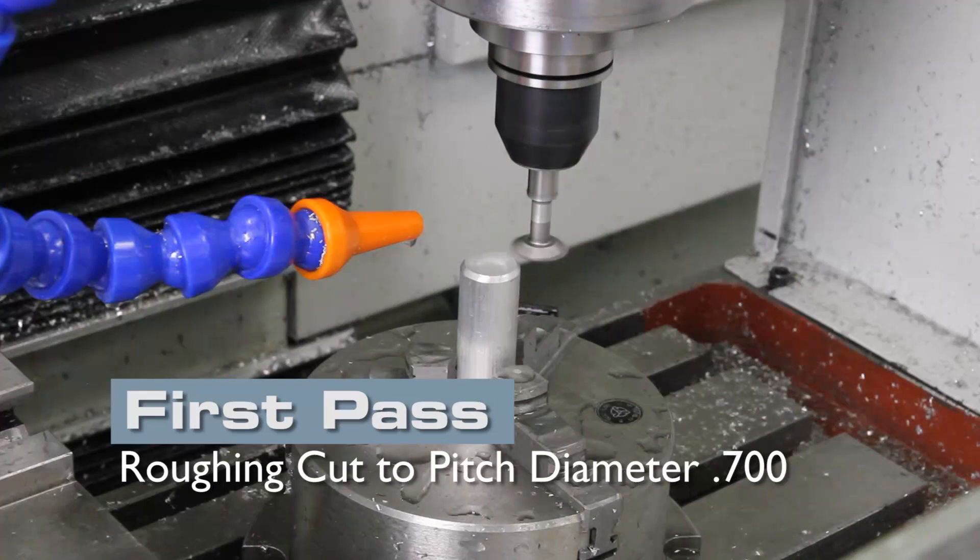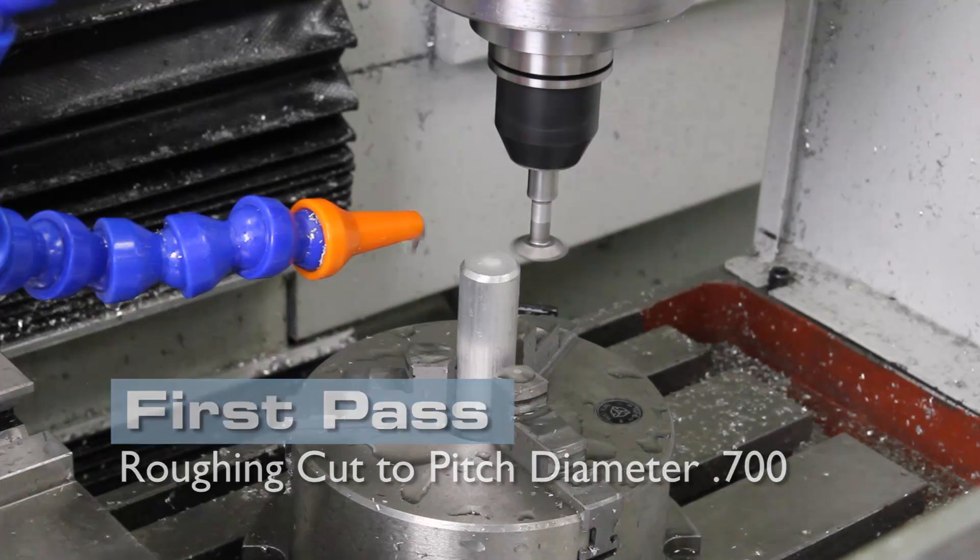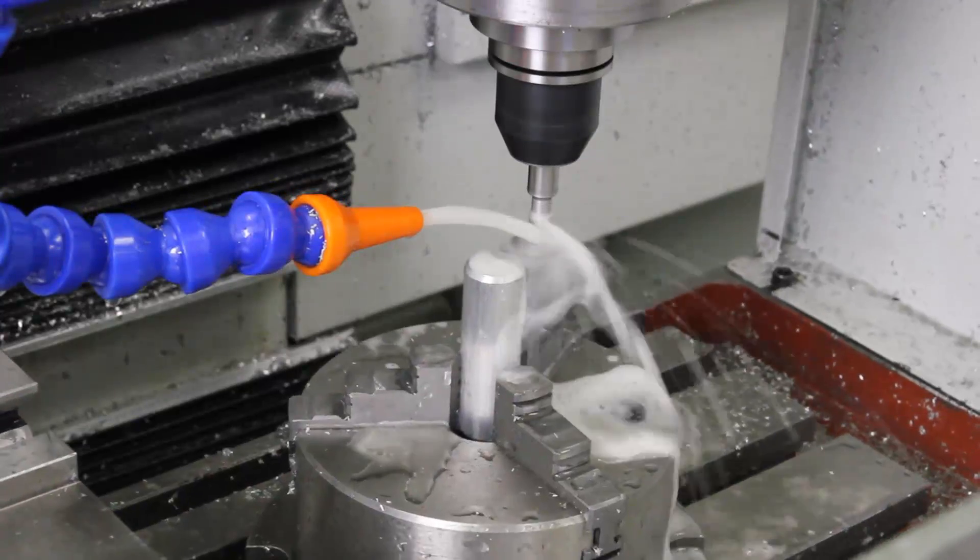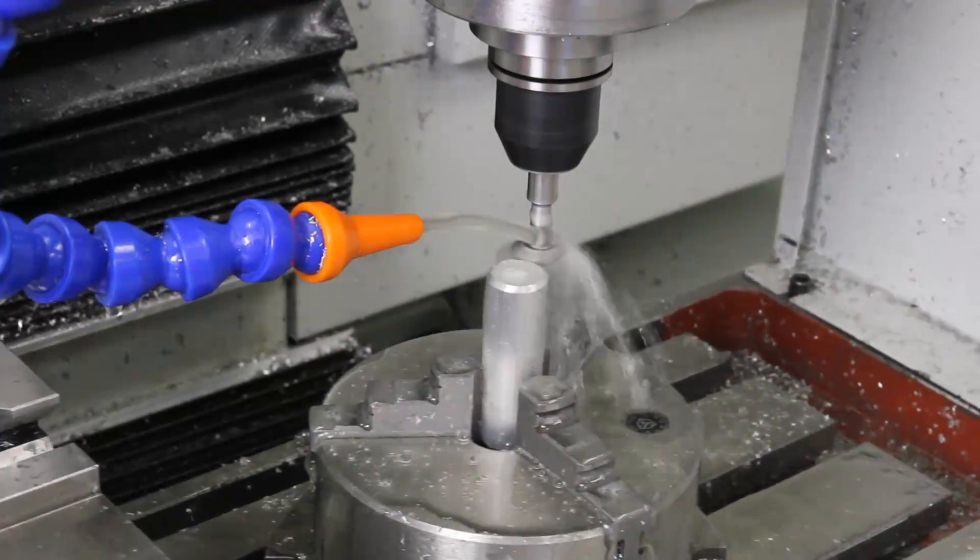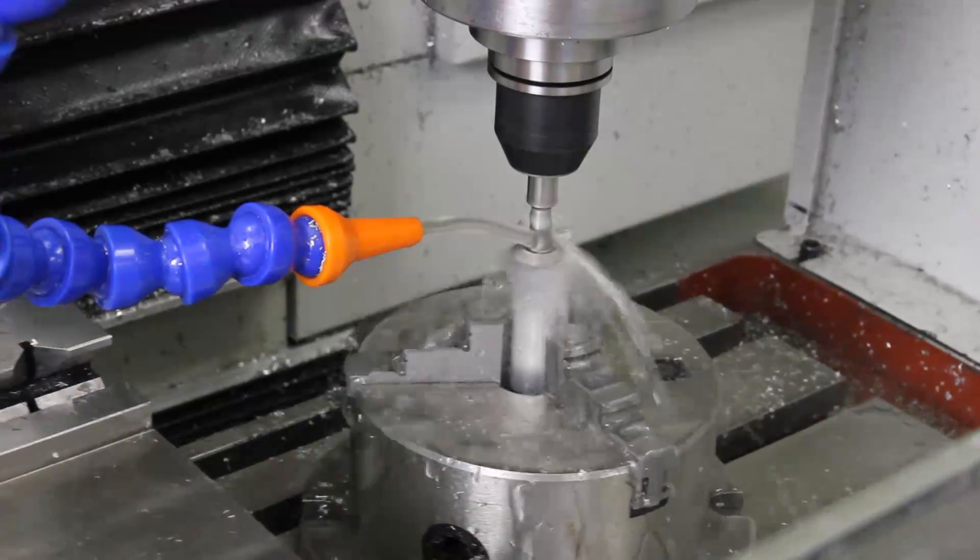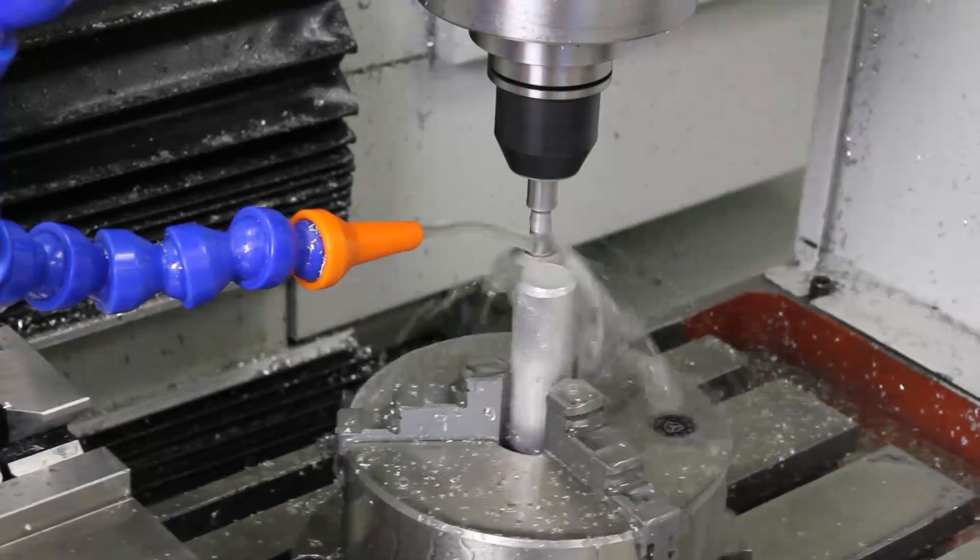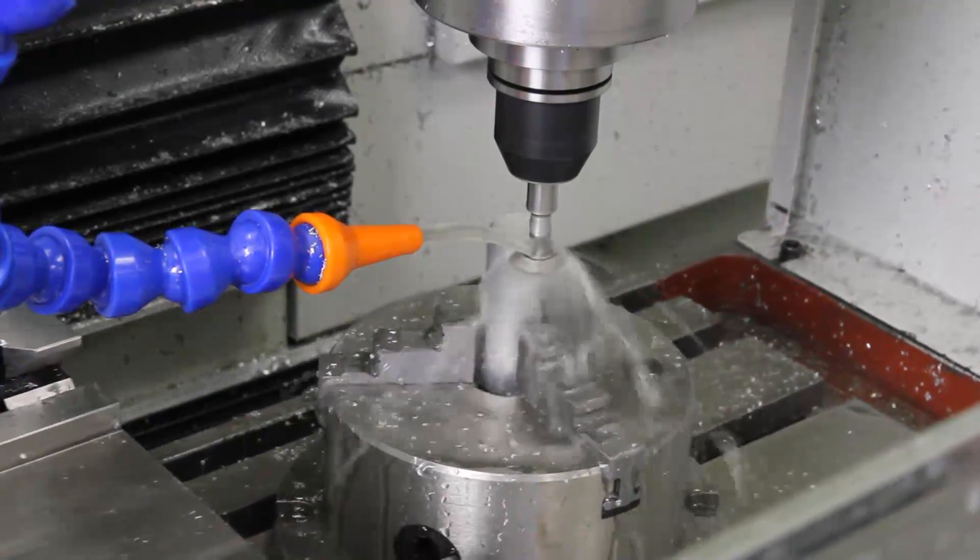For the first pass, we're going down to a pitch diameter of 700 thou. As you can see, we're able to cut at a much faster speed in the relatively soft aluminum. We're cutting at 60 inches per minute, four times the speed we did in steel.